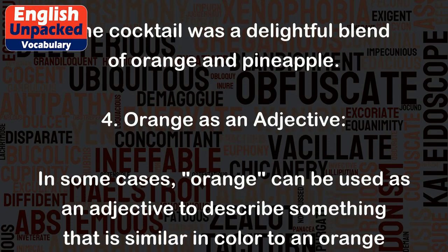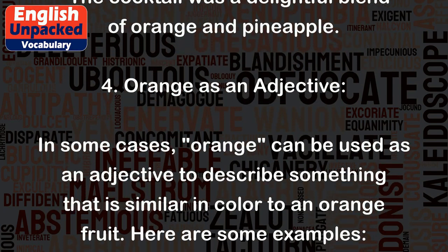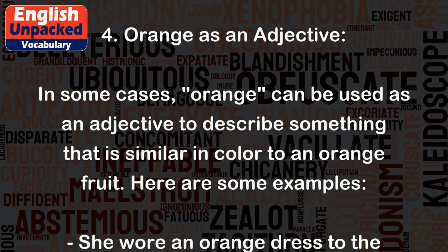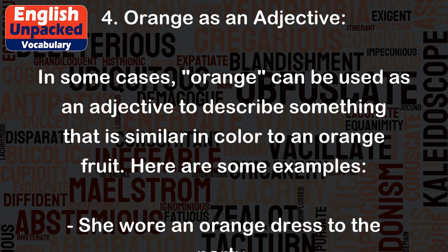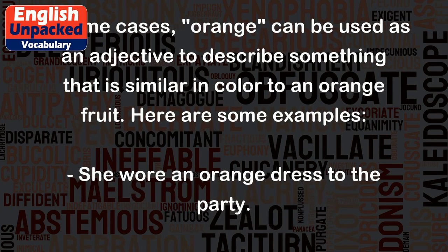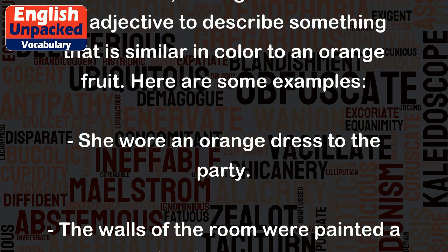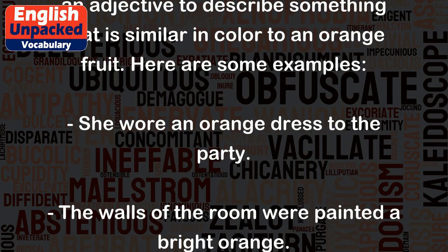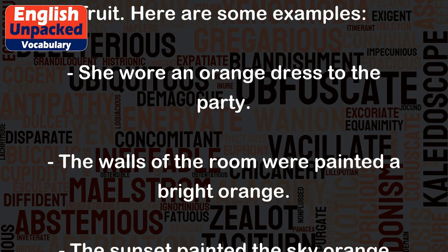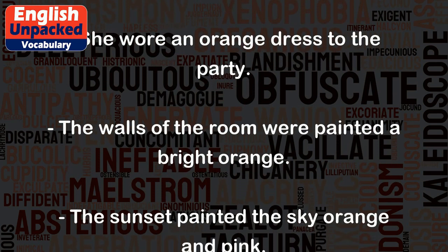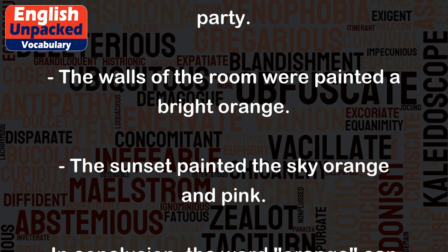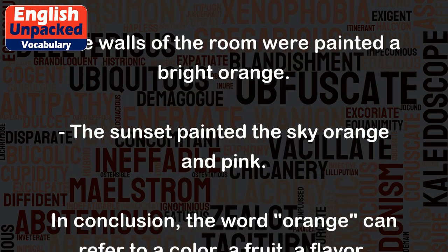4. Orange as an adjective. In some cases, orange can be used as an adjective to describe something that is similar in color to an orange fruit. Here are some examples. She wore an orange dress to the party. The walls of the room were painted a bright orange. The sunset painted the sky orange and pink.